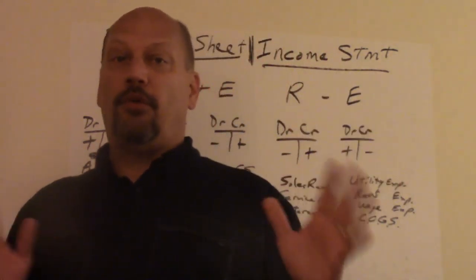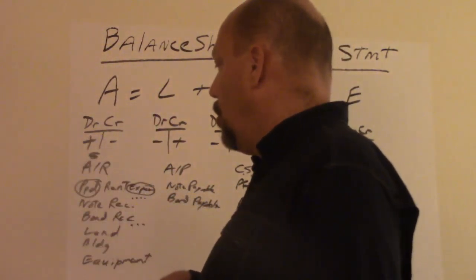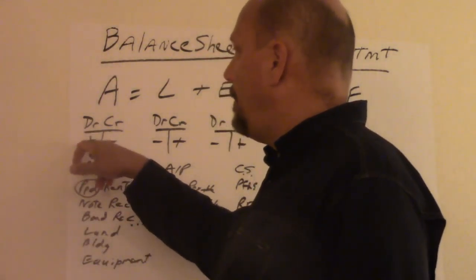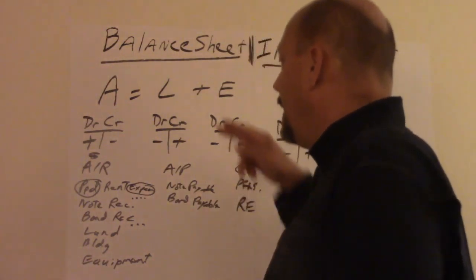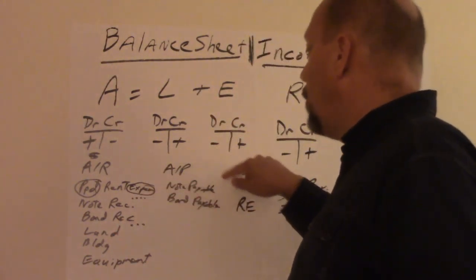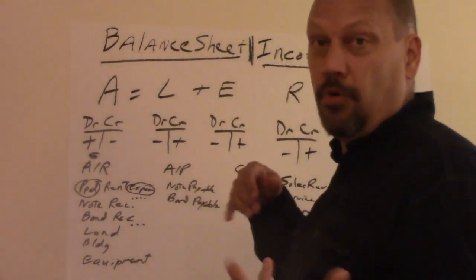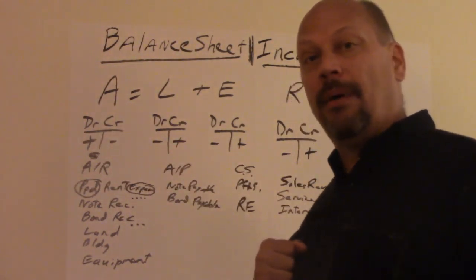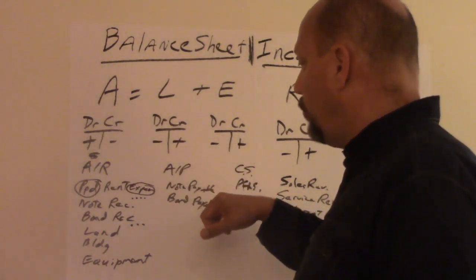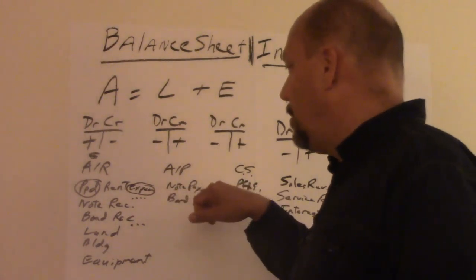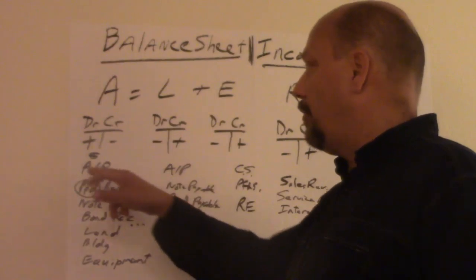When you're talking about the categories, there's a list of accounts under it. Depending which category you're in, any of those account names, you then say, well, did I receive it or did I give it? Did you get more or do you now have less? And the more or less is increase decrease. Under assets, if it's more, like you have more cash or more equipment, that means your assets went up, so you debit cash or debit equipment.